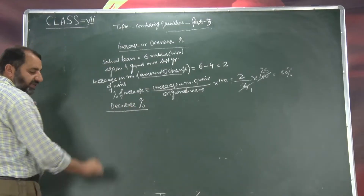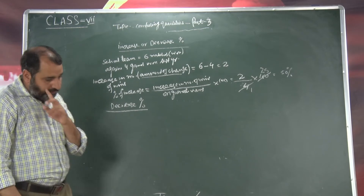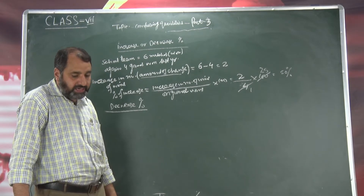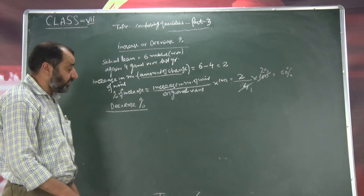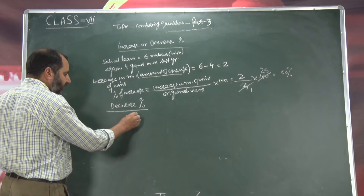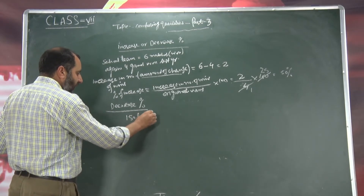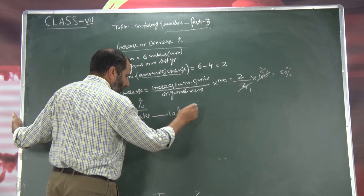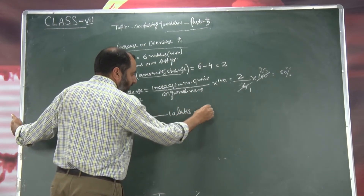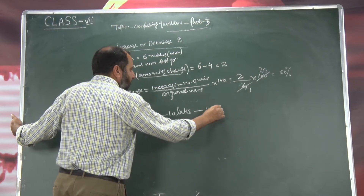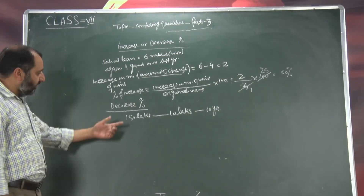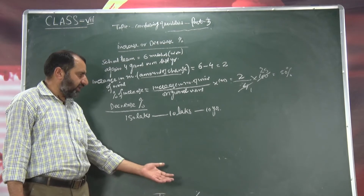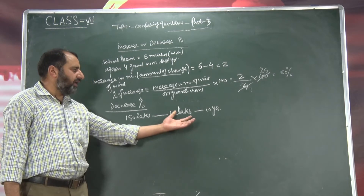Decrease percent kya cheez hai? Agar hain dekhi ki illiterate percentage decrease ho rai hai — 150 lakhs se decrease ho rai hai 100 lakhs in 10 years. Yani 10 saal mein, 150 lakhs se decrease ho rai hai illiterate persons ki tadad, 100 lakhs par aa jaati hai.